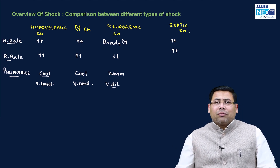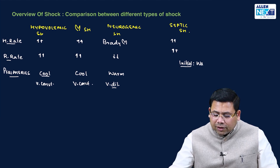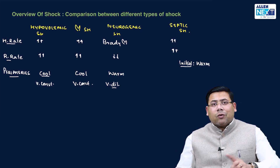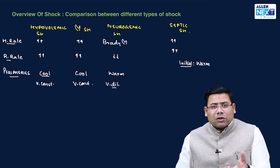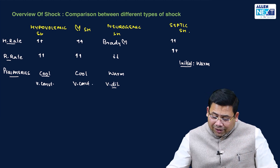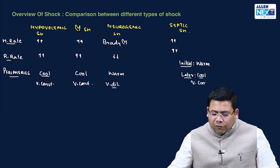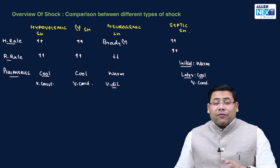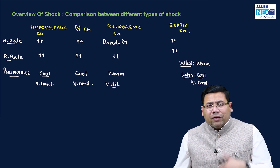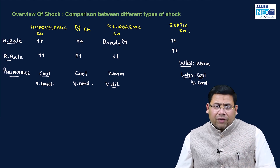What happens in septic shock? Initially, because of the effect of toxins — lipopolysaccharides or teichoic acid released by bacteria — the extremities are warm. But later, they become cool. So if you see a late case of septic shock without knowing the infection component, it looks just like hypovolemic shock. This is very important.